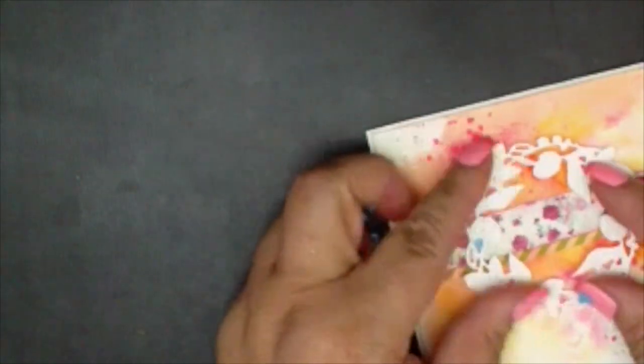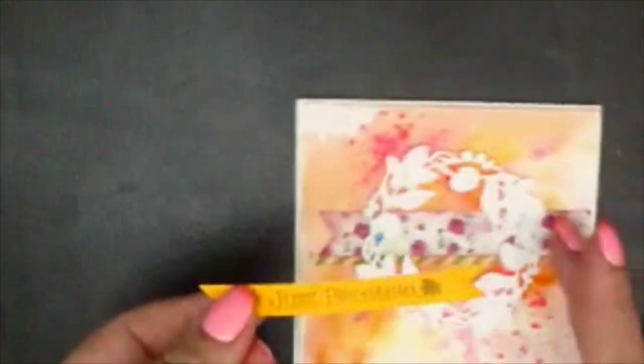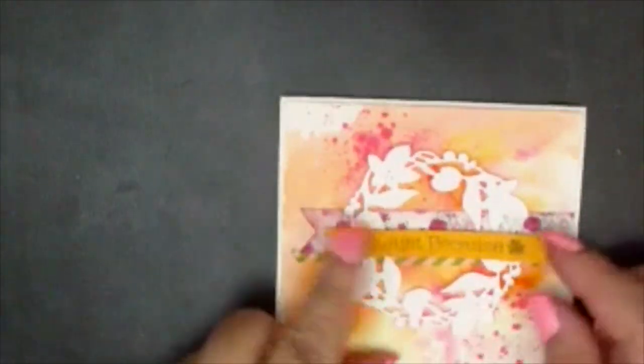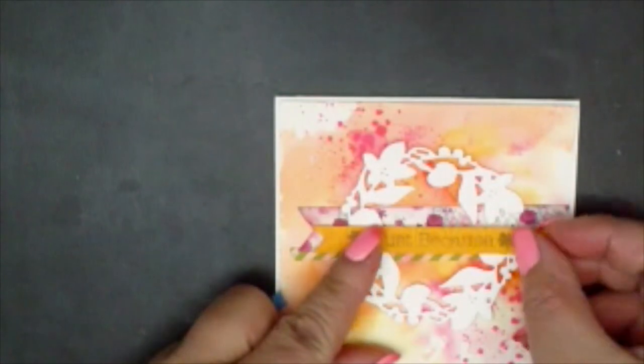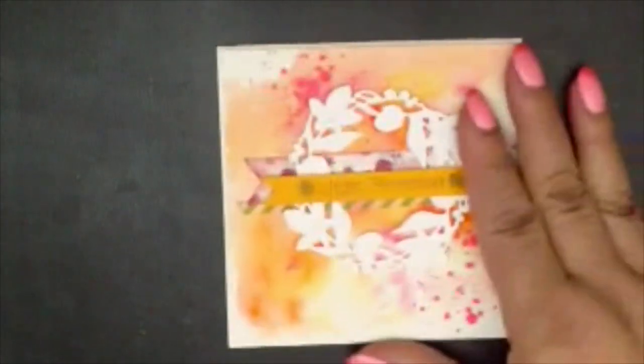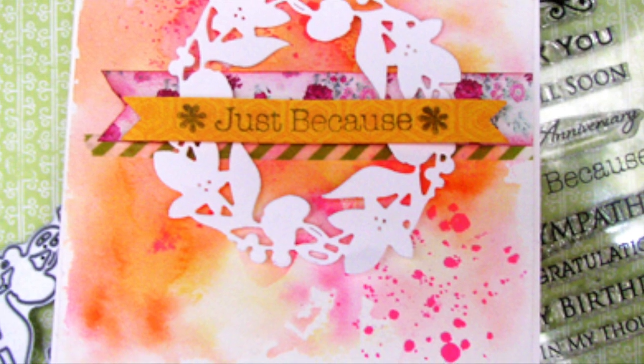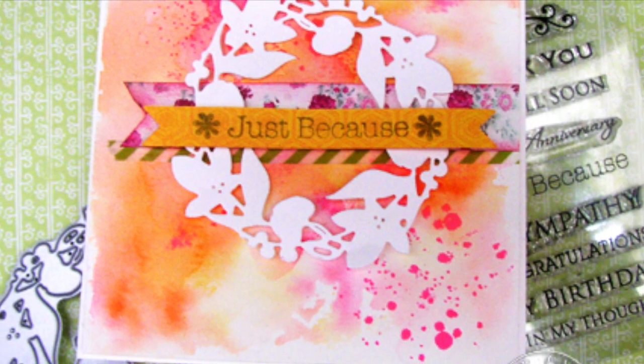And I've already added some foam tape to the back of the banner the sentiments is on. And I'll just attach that to the front of the card. Sweet. Watercolor smooshing. I hope you give it a try. And remember all products are found at the Cat's Pajamas.